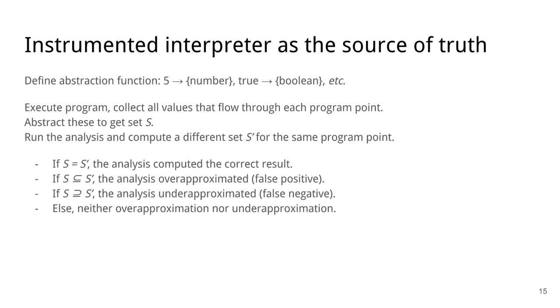And last, if the two sets are not equal, but are also not in the subset relation, it means that the analysis result is wrong, but it is neither an over-approximation nor an under-approximation. And by doing that, we would basically be able to find the percentage of code in the program that the analysis analyzed correctly and the percentage of false positives and false negatives and get a score for the whole program.